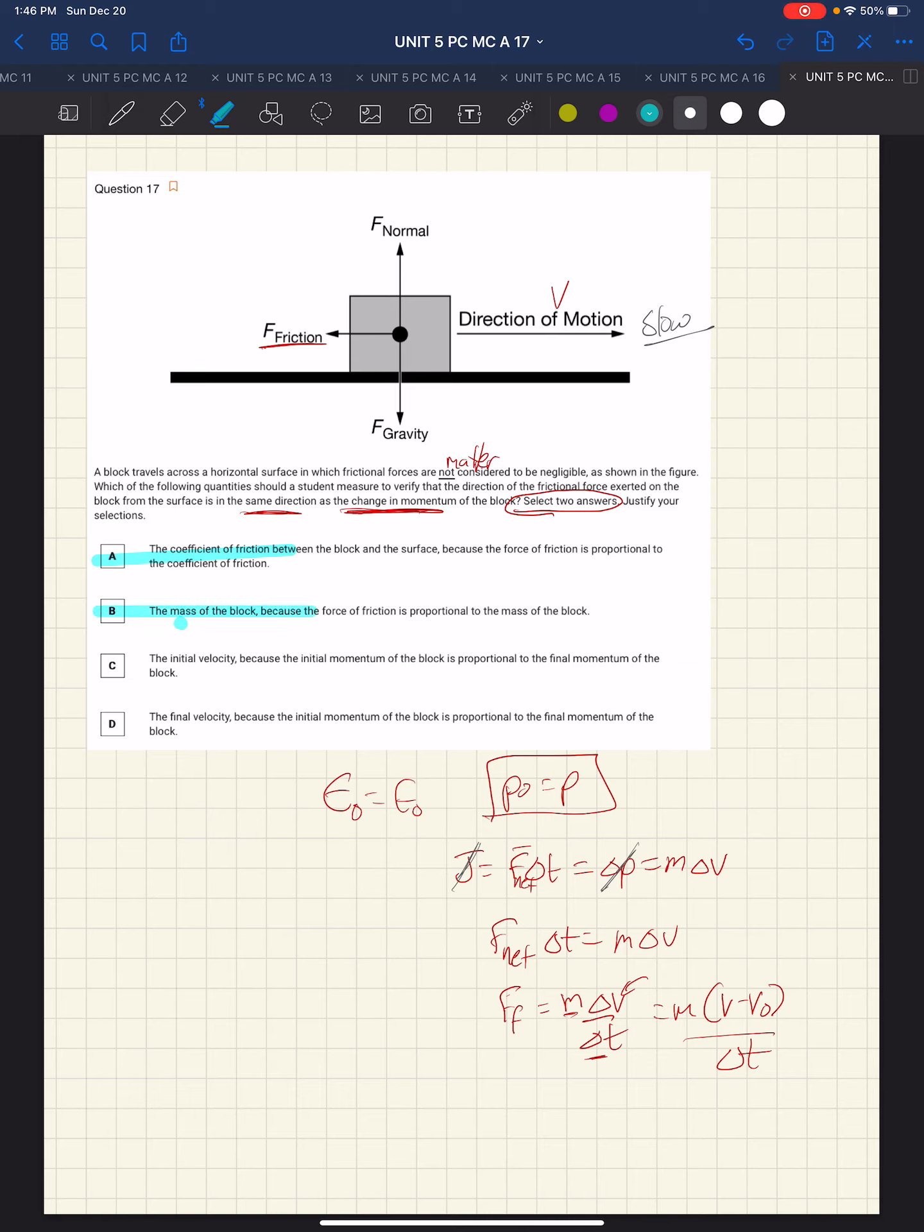The initial velocity is proportional to the final momentum of the block. Well, the initial velocity we definitely need, and the final velocity, because the initial momentum of the block is proportional to the final momentum of the block.